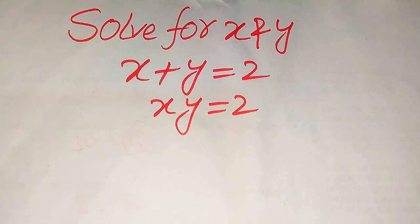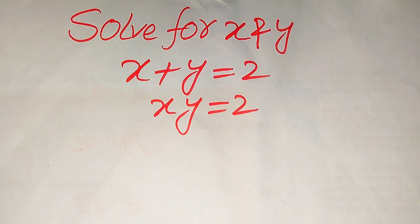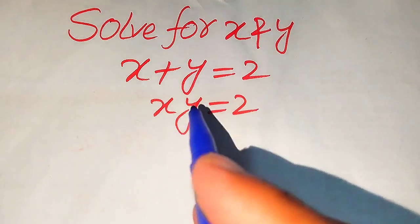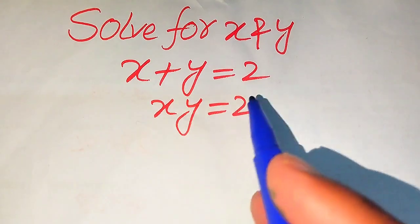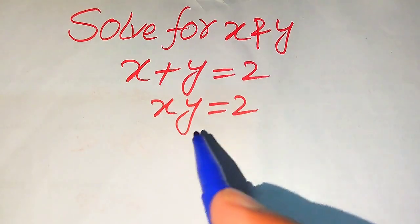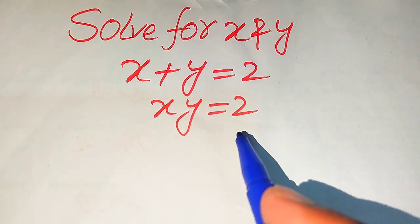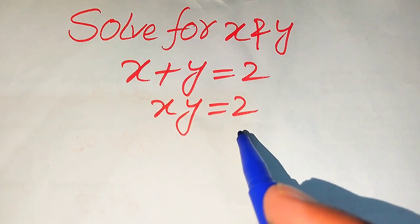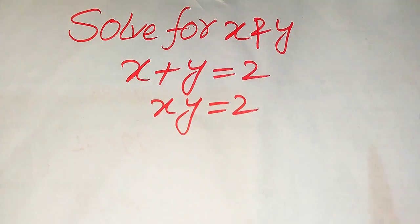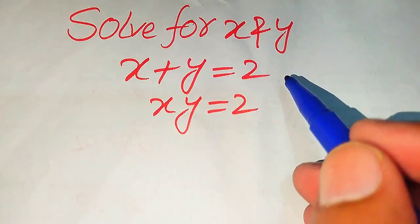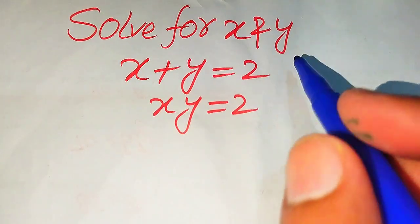Hello everyone. How to solve this problem for the values of x and y if we have x plus y equals 2 and x times y also equals 2, and we solve this problem for all the values of x and y.